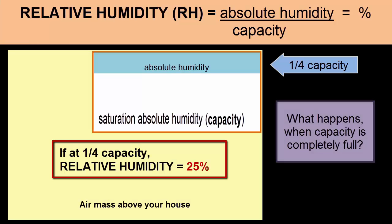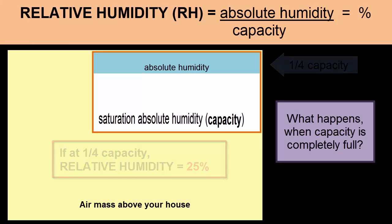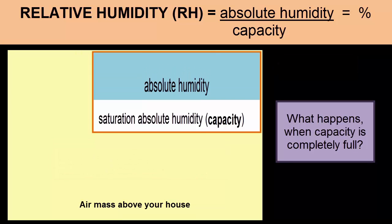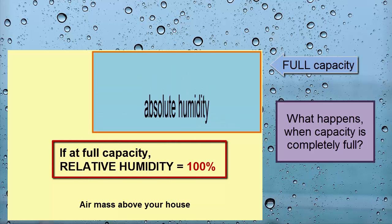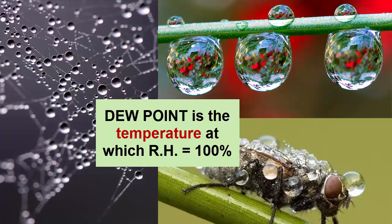What happens when the capacity is completely full? When the capacity is reached and air is saturated with water, water will start to precipitate on available solid surfaces. The temperature at which a given air mass with a given absolute humidity would reach its capacity or become saturated is called the dew point.